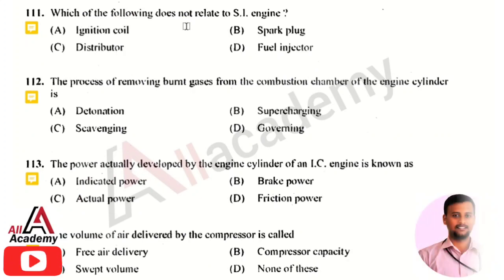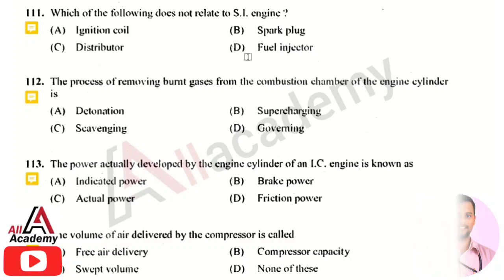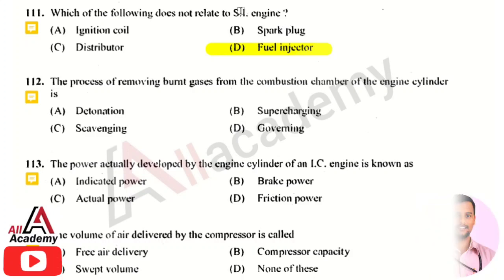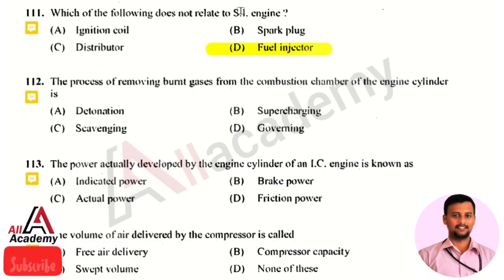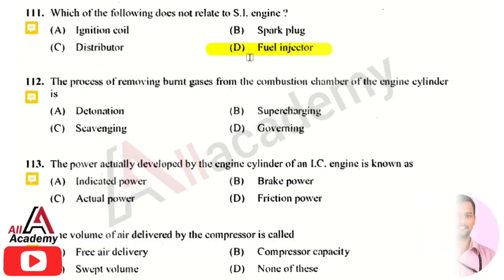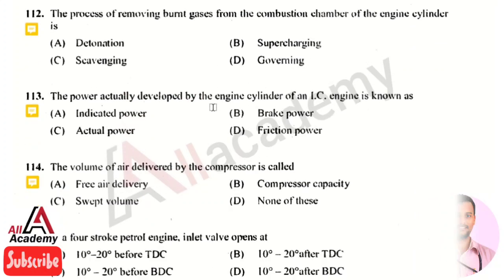The component that does not belong to an SI engine is the fuel injector. The SI engine refers to a spark ignition engine, which includes a spark plug, ignition coil, and distributor. The fuel injector is present in a CI engine, that is, a compression ignition or diesel engine.